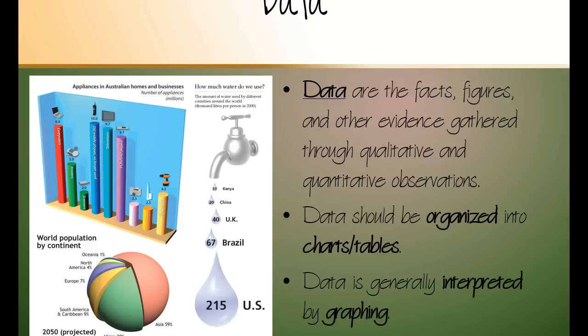Data. Data, data, however you want to say it. And the plural of data is data. So data are the facts, figures, and other evidence that we gather. We gather them through either qualitative observations or quantitative. Always, always, always in here, I'm going to have you organize your data into some type of chart or table. That just helps us to then go ahead and graph it. And why do we graph in science? Because we need to understand the data we gathered. And next week, we're going to have another video just on graphing and homework assignment just on graphing so that we're all on the same page.